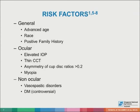Risk factors can be divided into general, ocular, and non-ocular. General risks include advanced age, race, and a positive family history of glaucoma. Ocular risks are numerous and include elevated intraocular pressure, thin central corneal thickness, an asymmetry of more than 0.2 between cup disc ratios of both eyes, myopia, and retinal vascular occlusions. Non-ocular risks include low perfusion pressure, diabetes (which is controversial), and vasospastic disorders.